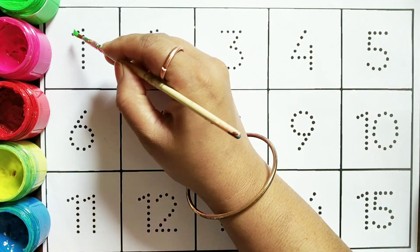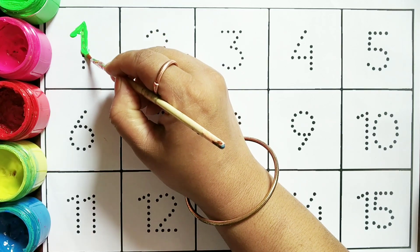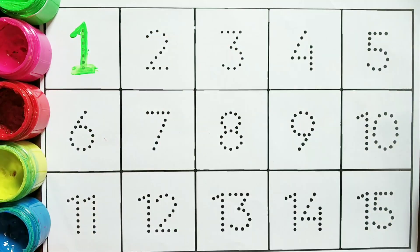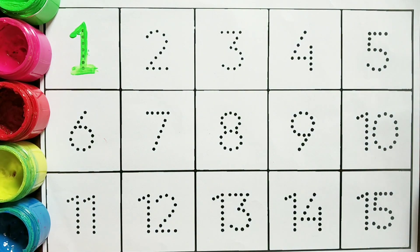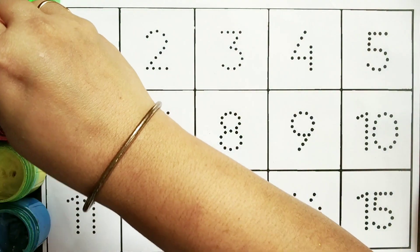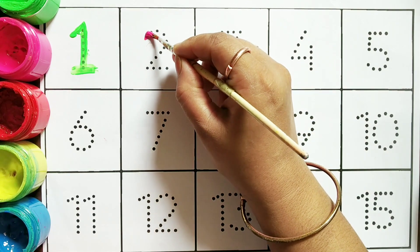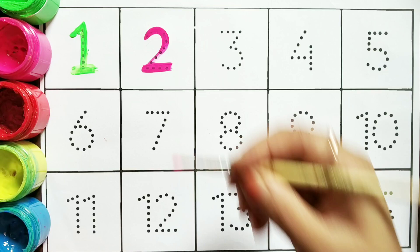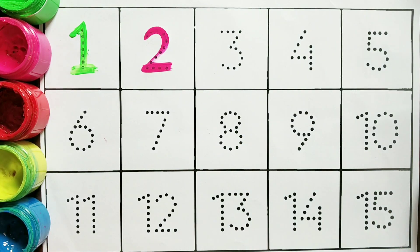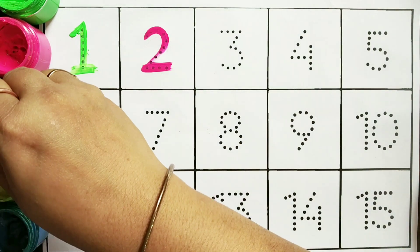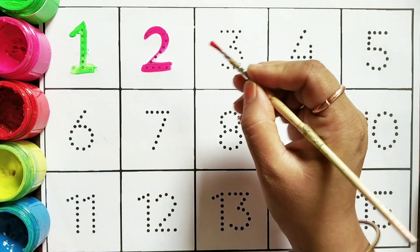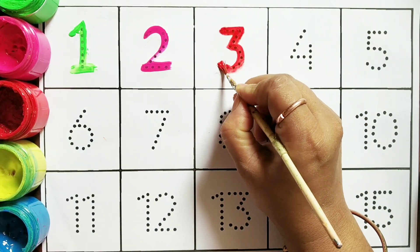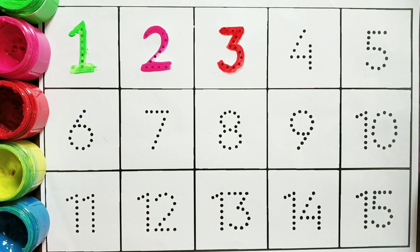Green color one, one, green color one. Pink color two, two, pink color two. Orange color three, three, orange color three.